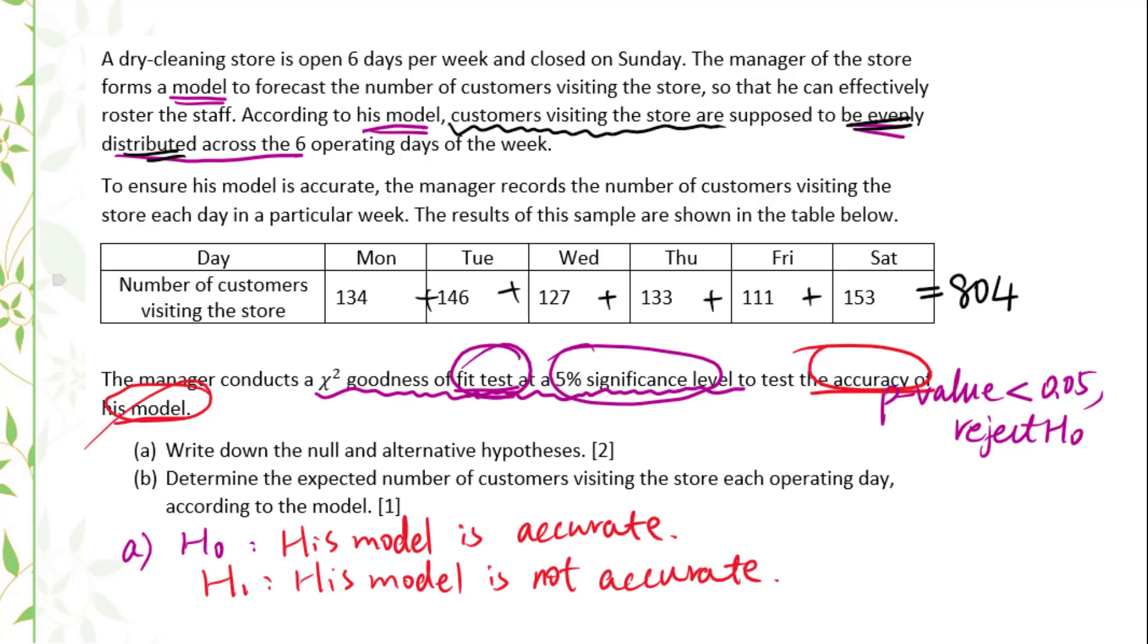We got 804 customers altogether. 804 divided by 6 equals 134. So we get 134 for each day.